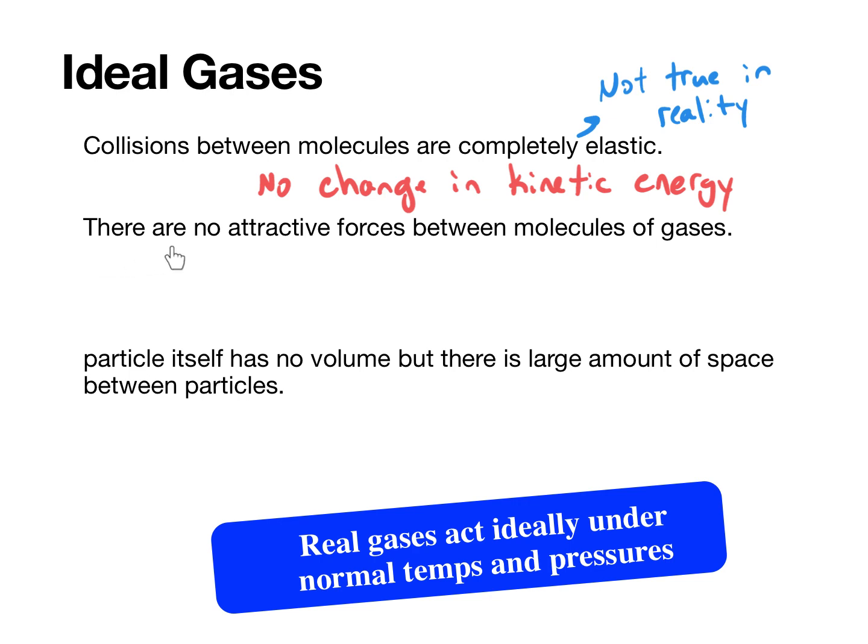Now, the next one is that there are no attractive forces between the molecules of gas. What that means is that when they come in contact with each other, there are no intermolecular forces. Now, once again, that's not true of real gases, but ideal gases are not affected by the intermolecular forces and may be attracted to other gas particles. But in this case, these two kind of go along together. When they collide, they do not attract each other, and as a result, they're completely elastic or they don't slow down.